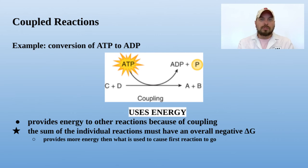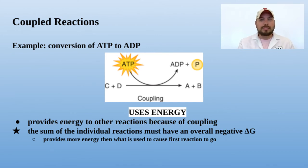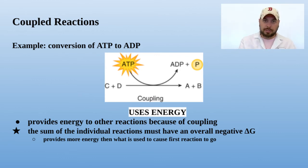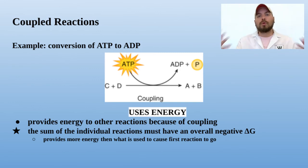So no, turning ATP into ADP does not create energy. However, when coupled with other reactions, the overall delta G is negative.